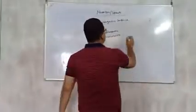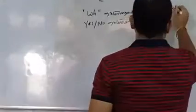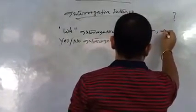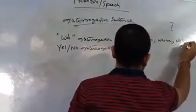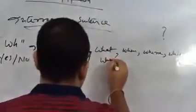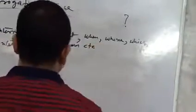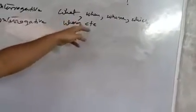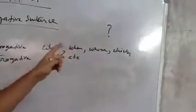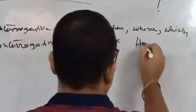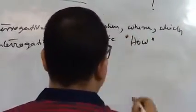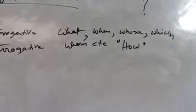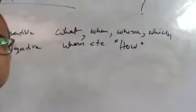WH-interrogative sentences begin with words like what, when, where, which, who, etc. You will see the initial letters of these words are 'WH' — every word has the two initial letters W and H, that is why they are called WH-interrogative sentences. Another important thing is that the word 'how', although there is no 'WH' in the word, still comes in the category of WH-interrogative.